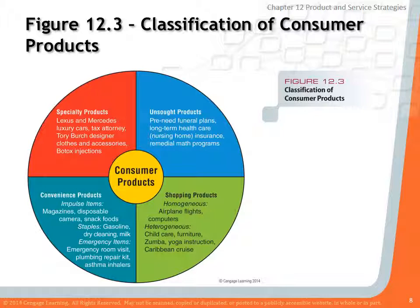A specialty product has a unique set of characteristics and is typically more upscale or pricier. For example, going out and buying a Mercedes or a BMW — those are specialty items. They're available, but not everywhere. Unsought products are things you don't really want to use unless you have to. You know you need them, but you don't seek them out — for example, a funeral plan, life insurance, or remedial math programs. Those are all considered unsought products.